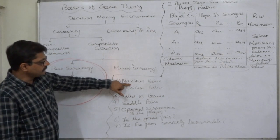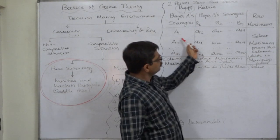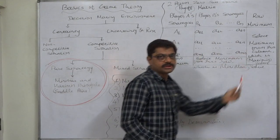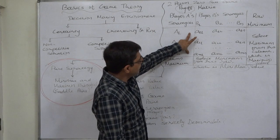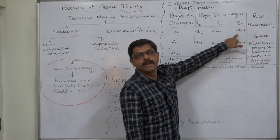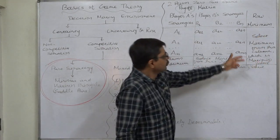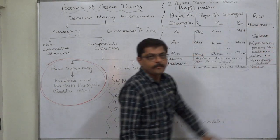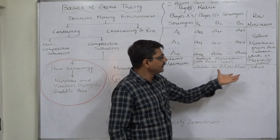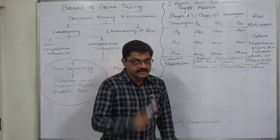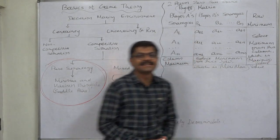First, we have to determine the maximin value. For that purpose, we select the minimum value from all rows — that means for player A, consider all strategies and find out the lowest payoff of each and every strategy, and list them in this column. This column represents the row minimum. Out of these minimum values of each strategy of A, find out the maximum value. That value is the maximum of the minimums — that's why it is known as the maximin value.